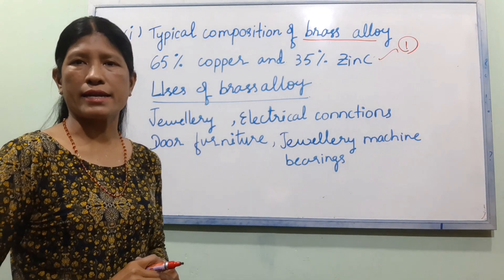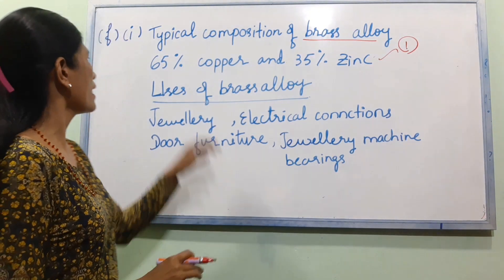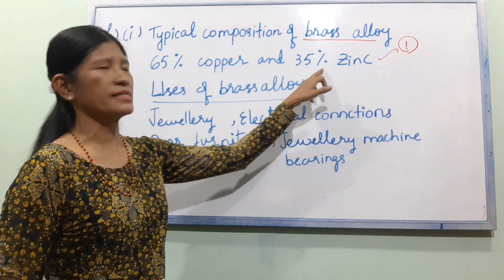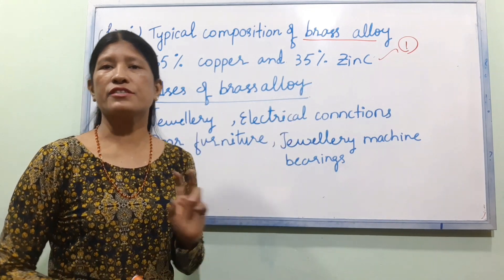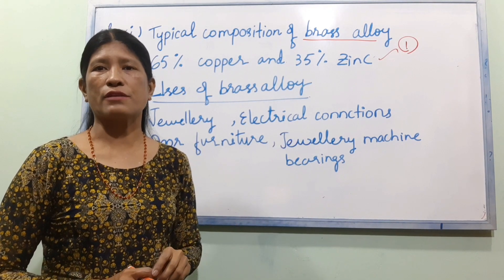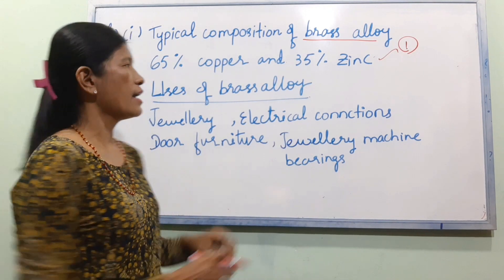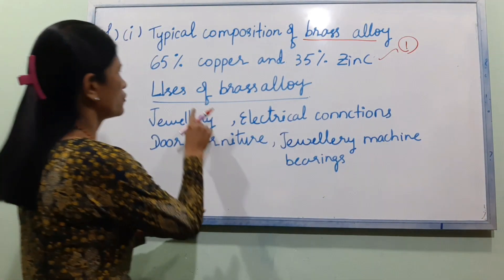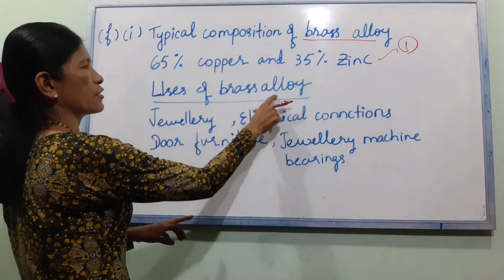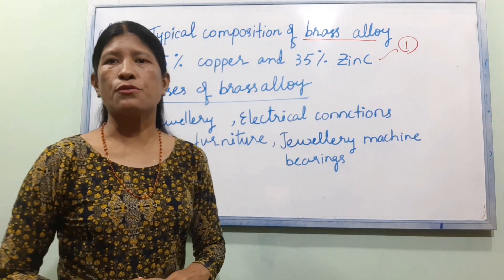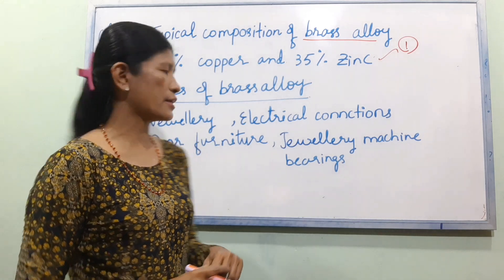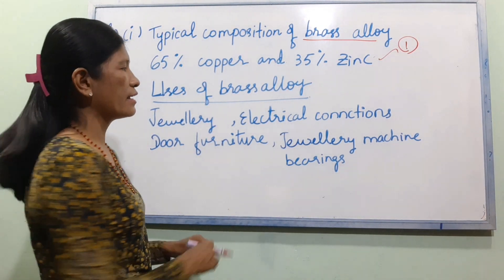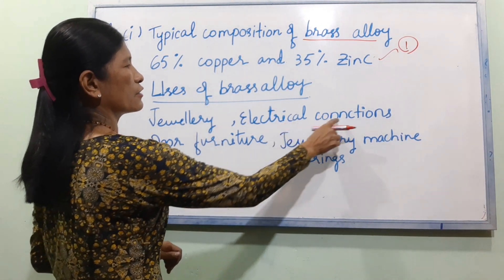Brass is 65% copper and 35% zinc. Uses of brass alloy include electrical connections.